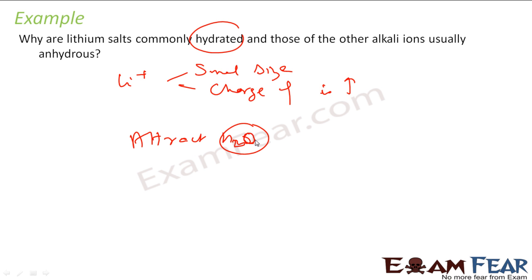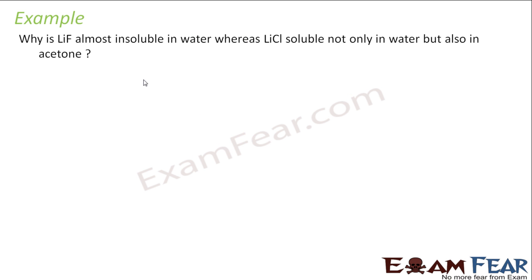Why is LiF most insoluble in water while LiCl is soluble not only in water but also in acetone? If you see LiF, F is very high electronegative, so this is ionic. But when I see LiCl, this is a little bit covalent also. It is partial covalent, partial ionic.